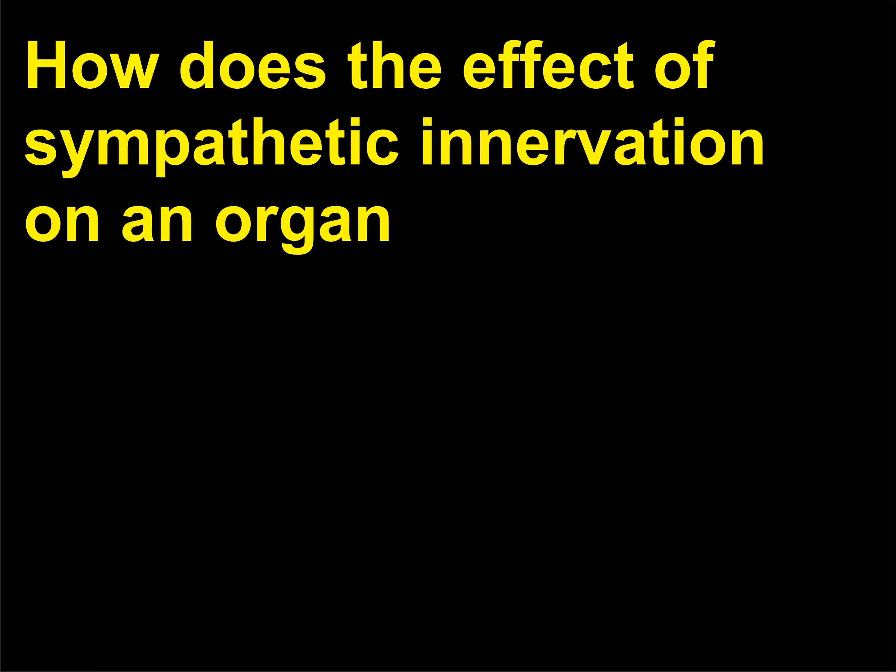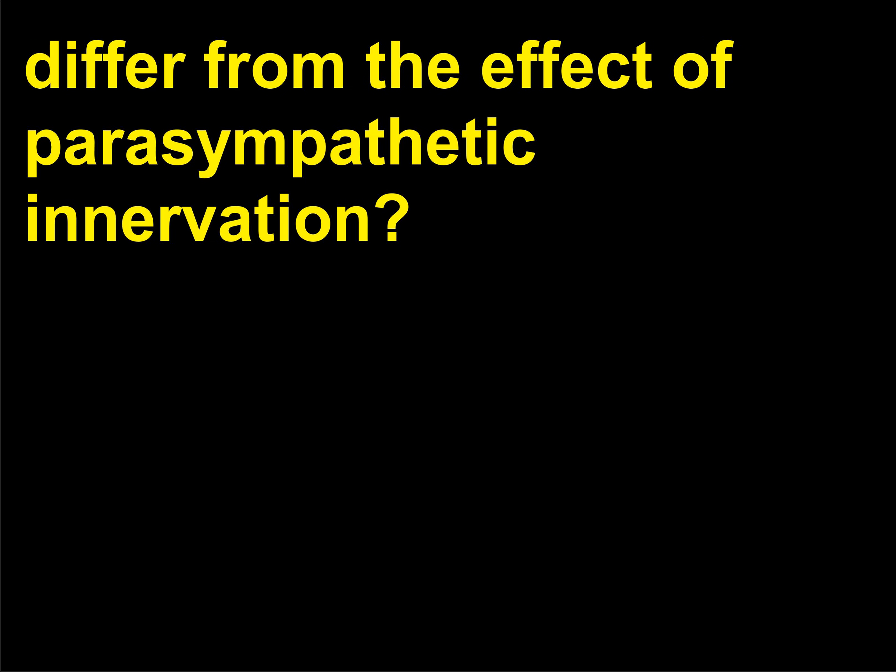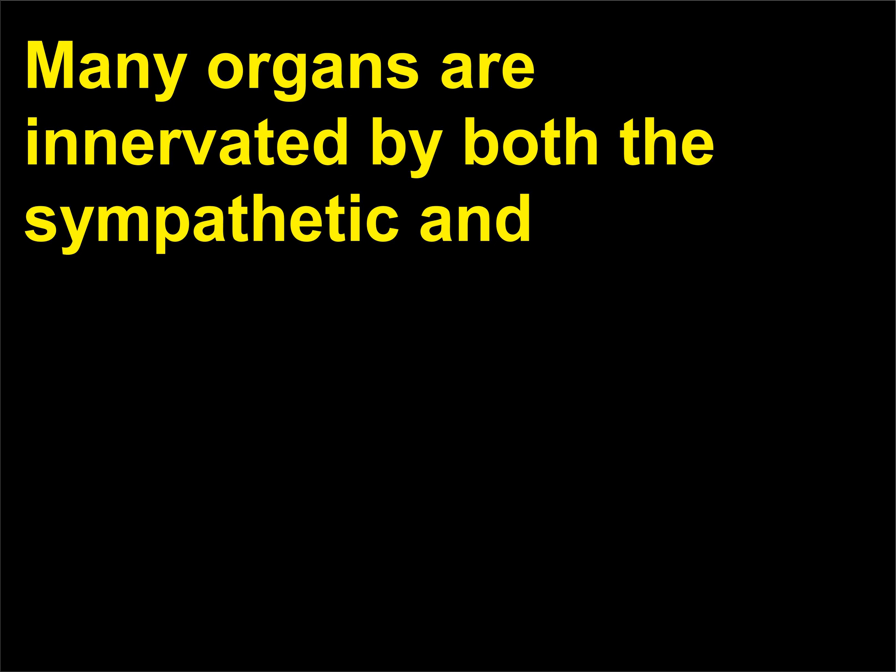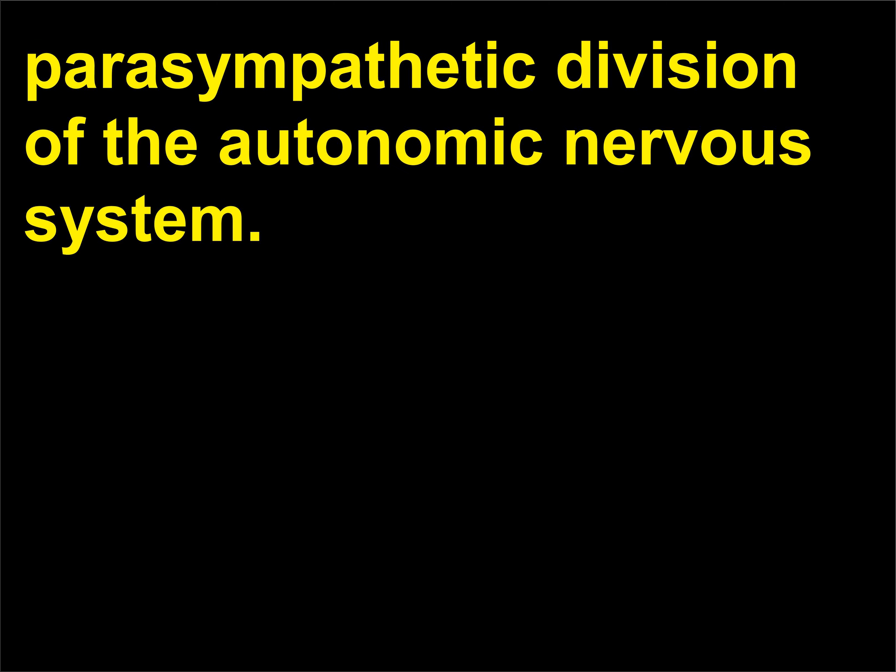How does the effect of sympathetic innervation on an organ differ from the effect of parasympathetic innervation? Many organs are innervated by both the sympathetic and parasympathetic divisions of the autonomic nervous system.